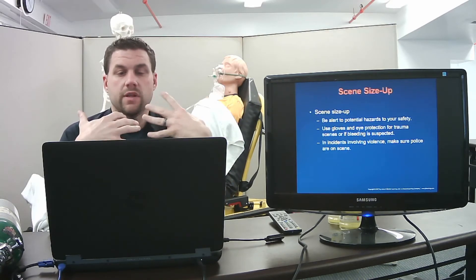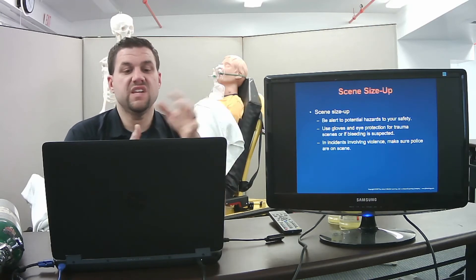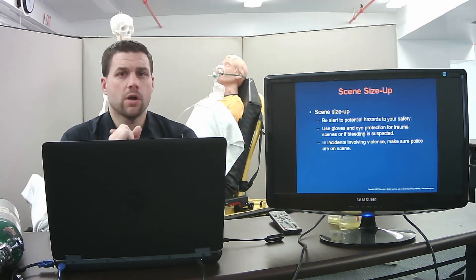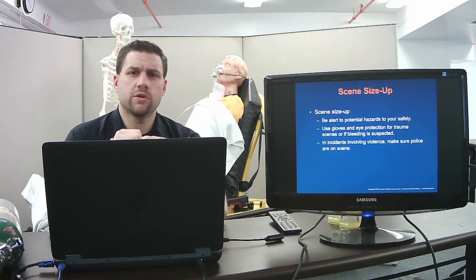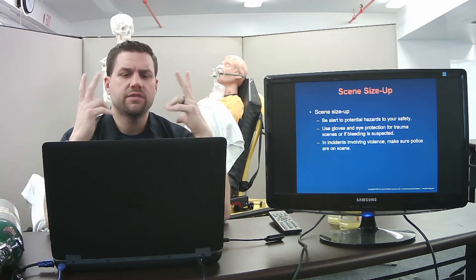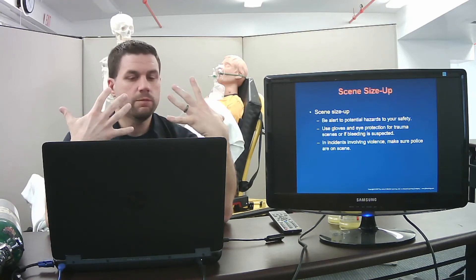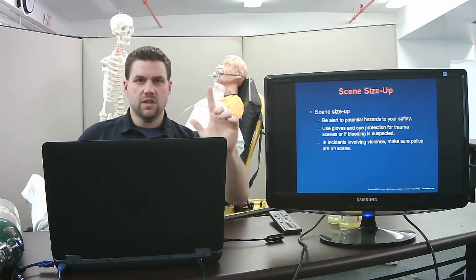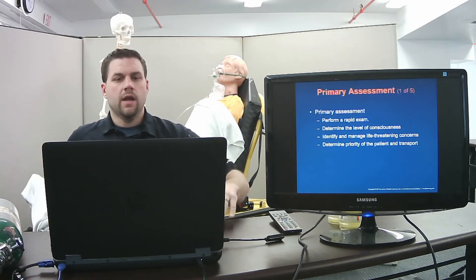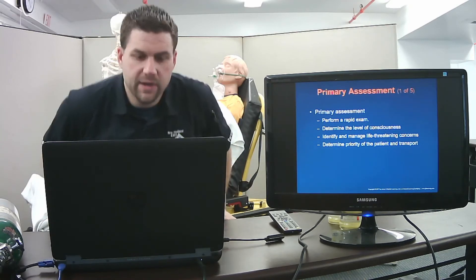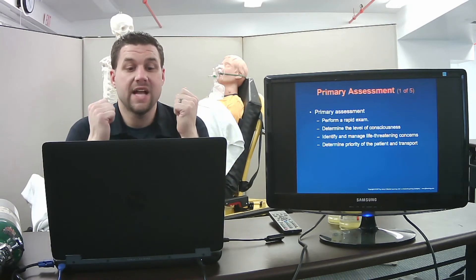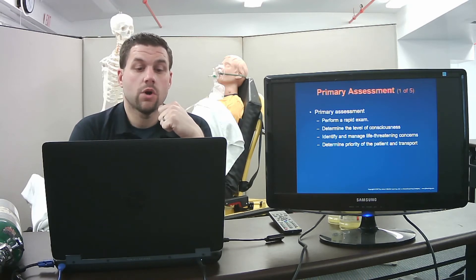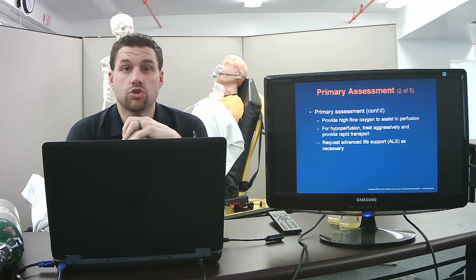Treatment always starts the same way: scene size-up, alert to potential hazards — you're number one, your partner is number two, your patient is number three. Use gloves and eye protection. For trauma scenes with suspected bleeding and all incidents involving violence, ensure police are on scene. Then perform your primary assessment: rapid exam, determine level of consciousness, identify and manage life-threatening concerns, determine patient priority, and transport.